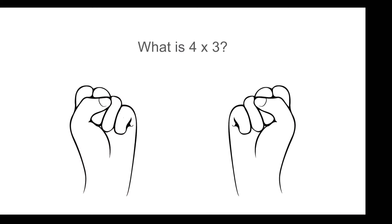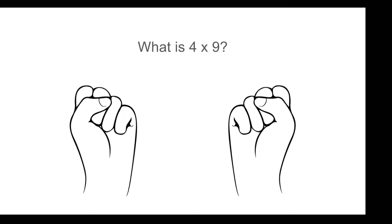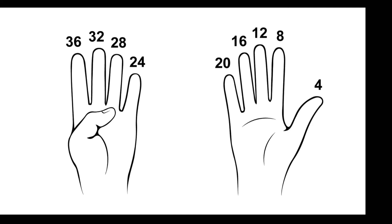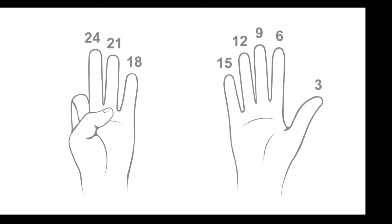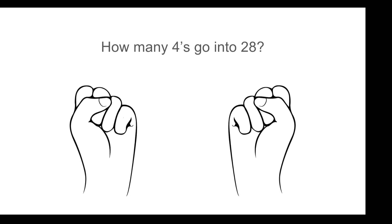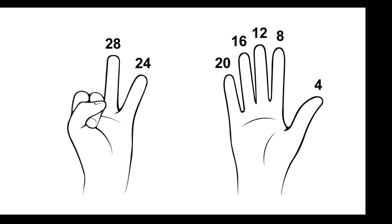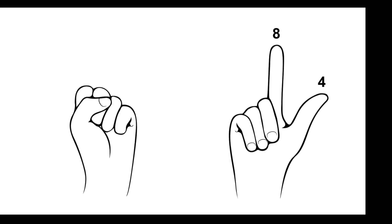After some practice, follow up with some naming questions. What is 4 times 3? She is counting by fours up to three fingers. What is 4 times 9? She is counting by fours up to nine fingers. What is 8 times 4? She is counting by fours up to eight fingers. How many 4s go into 28? She is counting by 4s up to 28, or 7 fingers. How many 4s go into 8? She is counting by 4s up to 8, or 2 fingers.